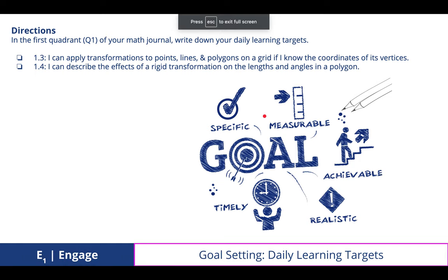In the first quadrant of your math journal, write down your daily learning targets. 1.3: I can apply transformations to points, lines, and polygons on a grid if I know the coordinates of its vertices. And 1.4: I can describe the effects of a rigid transformation on the lengths and angles in a polygon.